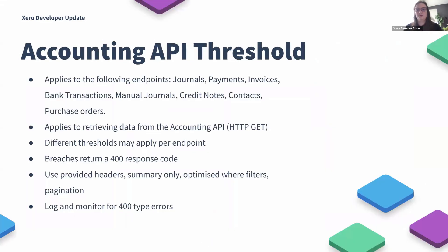Without further ado, I'm going to hand over to Edward, who's going to be talking to us a little bit about the accounting API threshold changes. In September, the accounting API had high volume thresholds expanded. The high volume thresholds are now enforced on the journals, payments, invoices, bank transactions, manual journals, credit notes, contacts, and purchase order endpoints. These thresholds only affect retrieving data — so if you're sending HTTP GET requests to those endpoints, those are the ones affected.